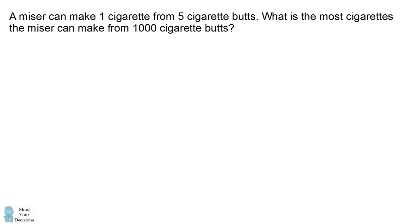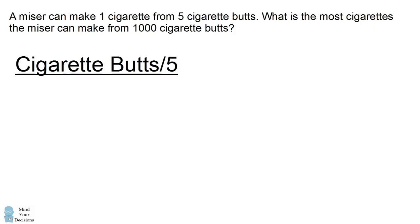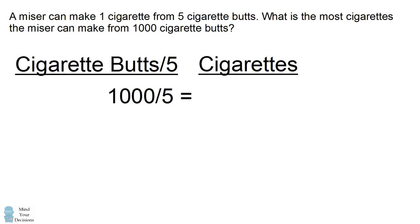We'll get started with the miser. Every five cigarette butts he can craft into a new cigarette, so we can divide the number of cigarette butts by five to get the number of cigarettes he can make. He starts out with 1,000 cigarette butts, so if you divide that by five, he can craft 200 cigarettes.